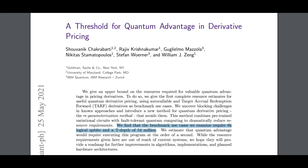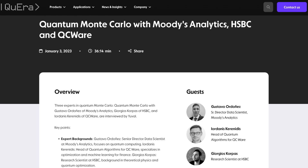How far are we from a killer app in quantum computing? The answer is probably a few years away. According to a 2021 paper co-authored by Goldman Sachs, the University of Maryland, and IBM Quantum, researchers found that to achieve a quantum advantage in derivative pricing, it requires 8,000 logical qubits and a T-depth of 54 million — requirements beyond current systems. In a group discussion with experts in quantum Monte Carlo from Moody's Analytics, HSBC, and QCWare, the consensus is that practical use in finance is at least 5 years away.